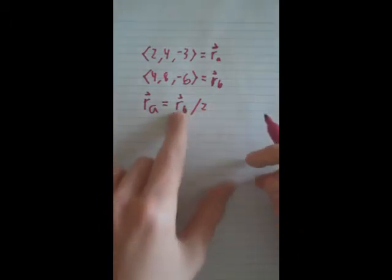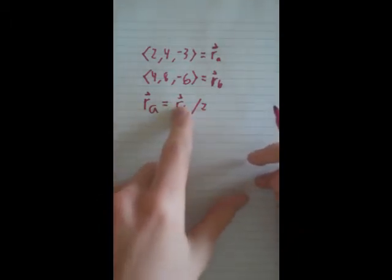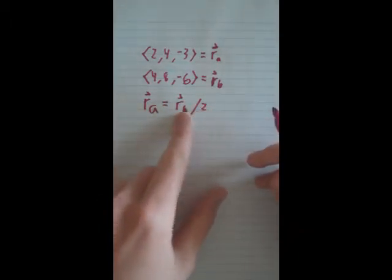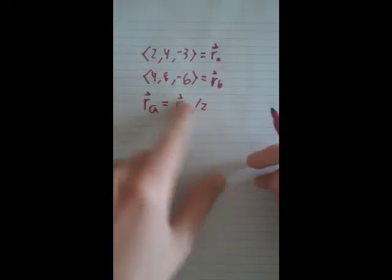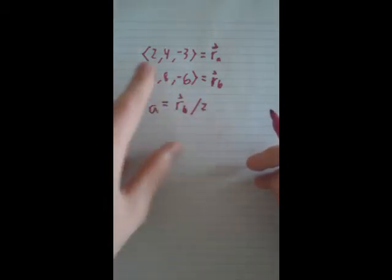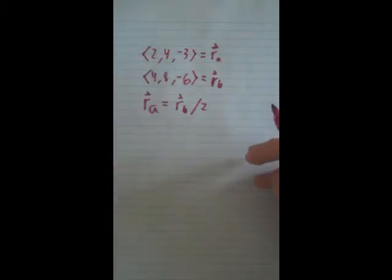Because we know that we can divide a vector by a scalar, and it will equal a vector. When you divide it by a scalar, you divide this by 2, this by 2, and this by 2. When you divide all these by 2, it equals that.